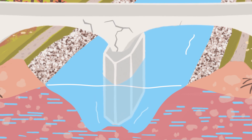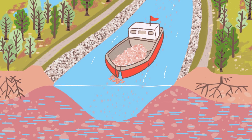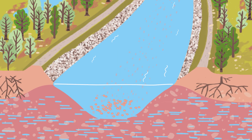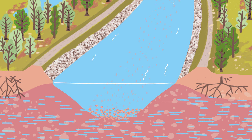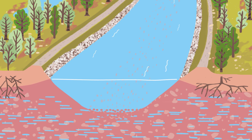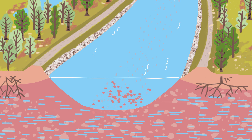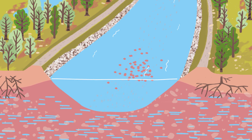In order to reduce or stop erosion, there are different options. One possibility is to add material to the river by ship. However, the river will usually carry away the sediments, which means material needs to be added regularly.